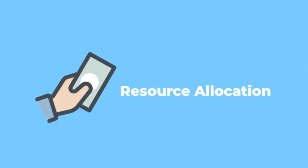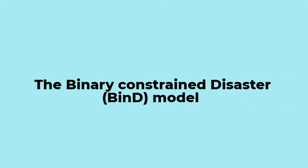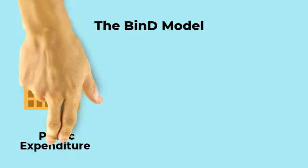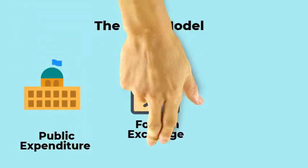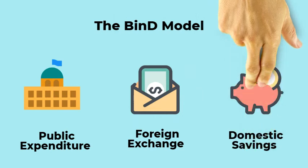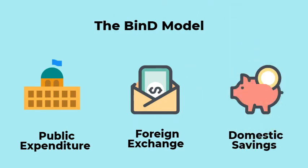Determining how best to allocate resources pre- and post-disaster times is a formidable decision task. The Binary Constrained Disaster Model is a new generation modeling framework. The BIND model represents the importance of public expenditure, foreign exchange, and domestic savings in enabling sustained economic growth.